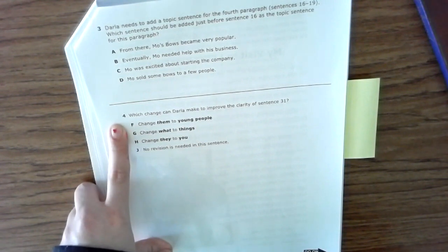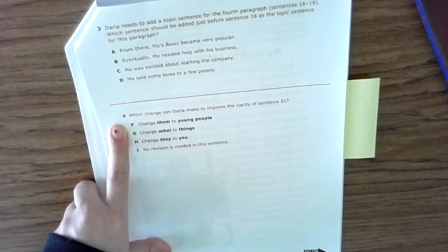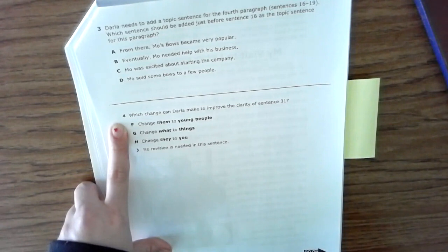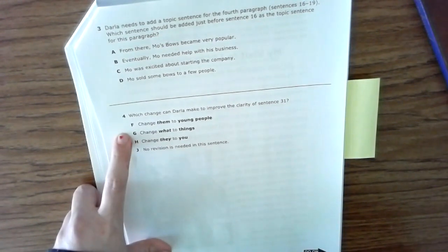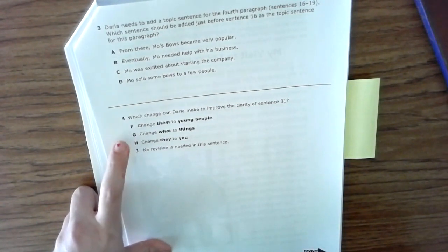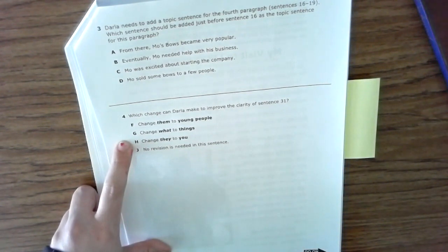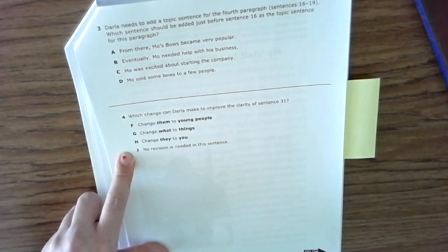Number four: Which change can Darla make to improve the clarity of sentence 31? Change them to young people. Change what to things. Change they to you. No revision is needed in this sentence.